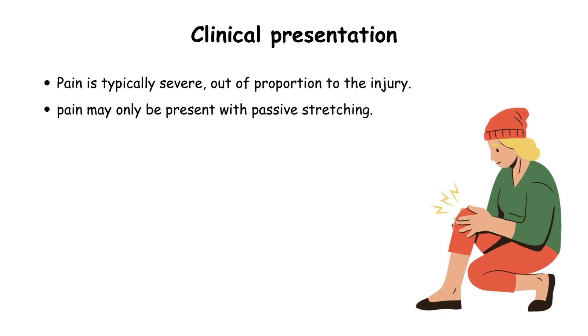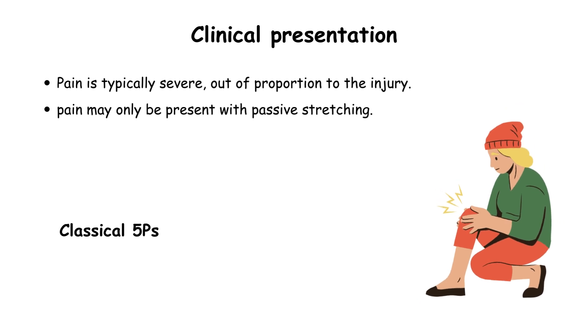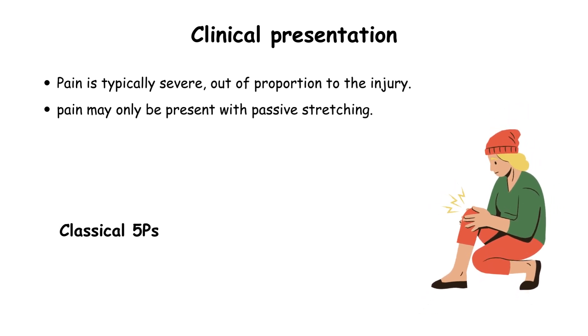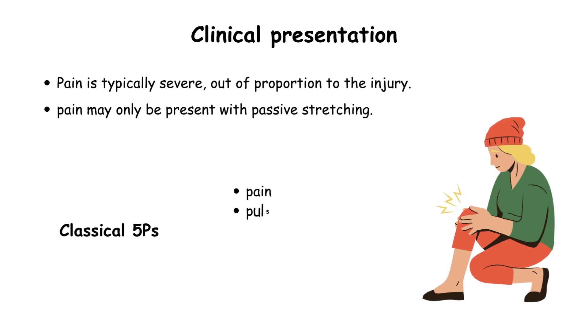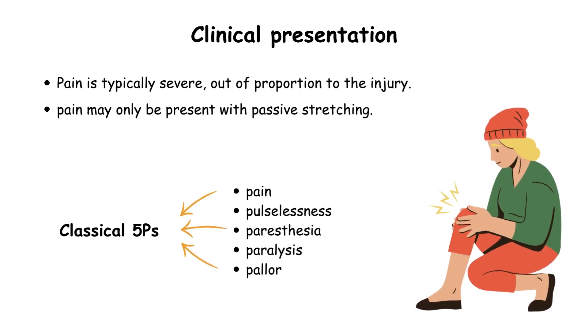Classically, the presentation of acute compartment syndrome is marked by the five P's: pain, pulselessness, paresthesia, paralysis, and pallor.